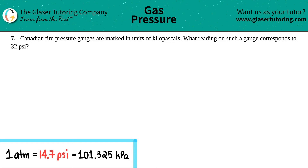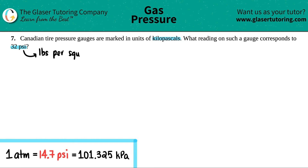Number seven: Canadian tire pressure gauges are marked in units of kilopascals. What reading on such a gauge corresponds to 32 psi? PSI stands for pounds per square inch, abbreviated as lbs per square inch — you could say psi or lb per inches squared; it's the same exact thing. We'll say psi because it's easier, but I want to give you the idea of what's really going on here.